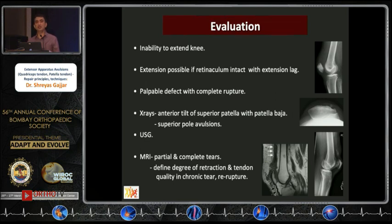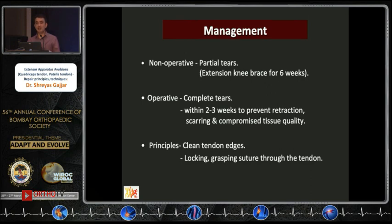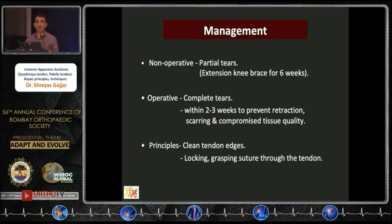Regarding management of quadriceps tendon tears, non-operative treatment is generally advocated for partial tears, with an extension knee brace applied for six weeks. On the operative side, complete tears are an ideal indication. It is important to address these within two to three weeks to try and prevent retraction, scarring, and compromised tissue quality.